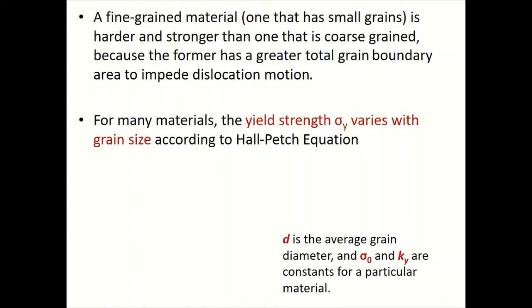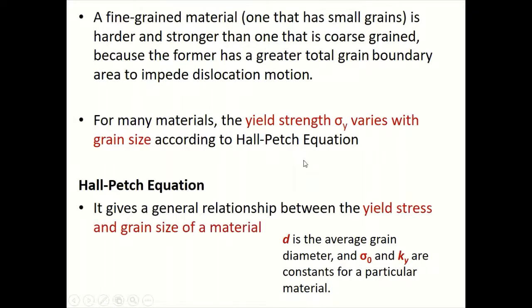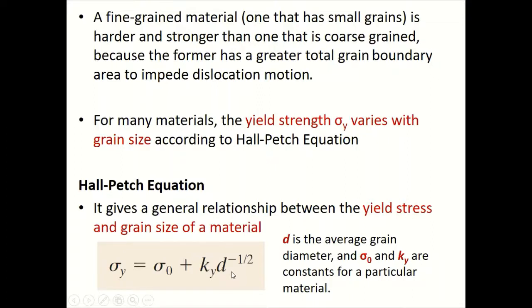An important relationship is the Hall-Petch equation, which gives the general relationship between yield stress and grain size: σy = σo + ky · d^(−1/2), or equivalently σy = σo + ky / √d, where d is the average grain diameter and σo and ky are material constants.